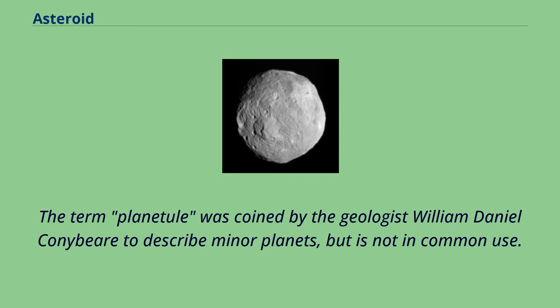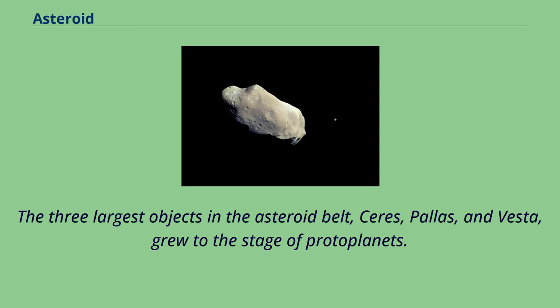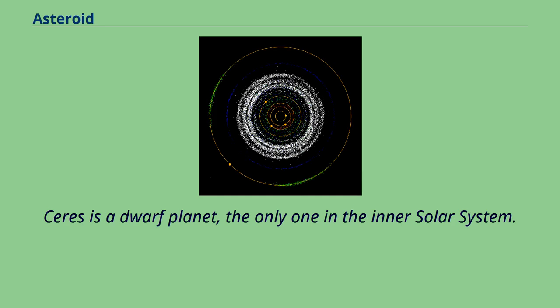The three largest objects in the asteroid belt — Ceres, Pallas, and Vesta — grew to the stage of protoplanets. Ceres is a dwarf planet, the only one in the inner solar system.